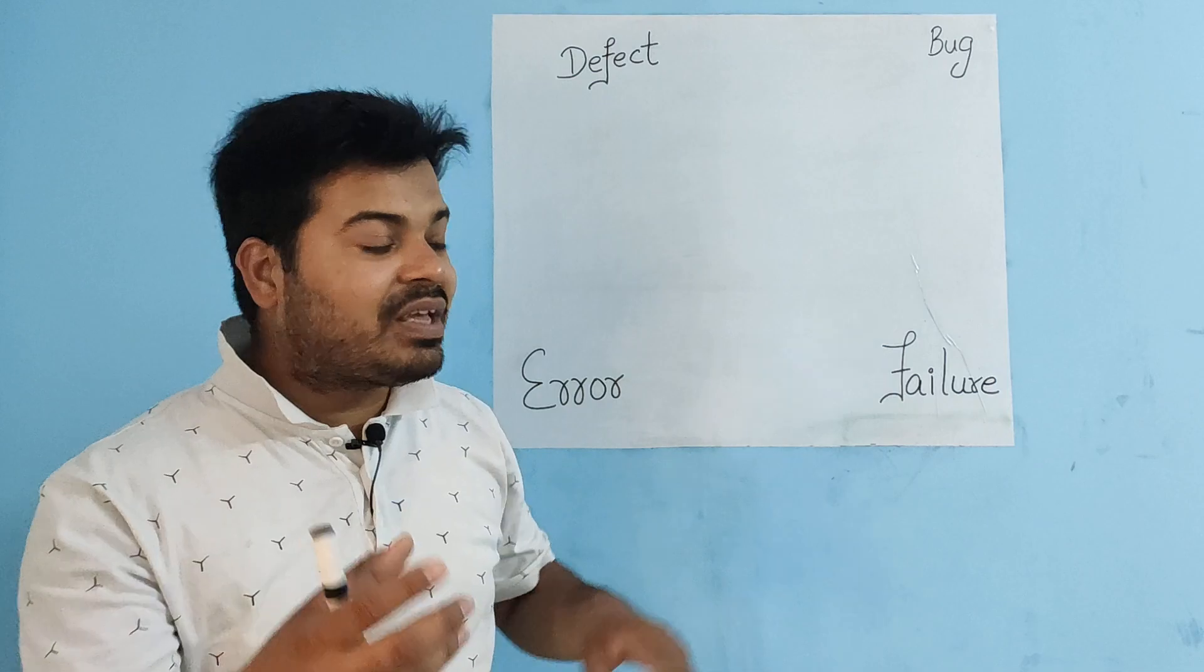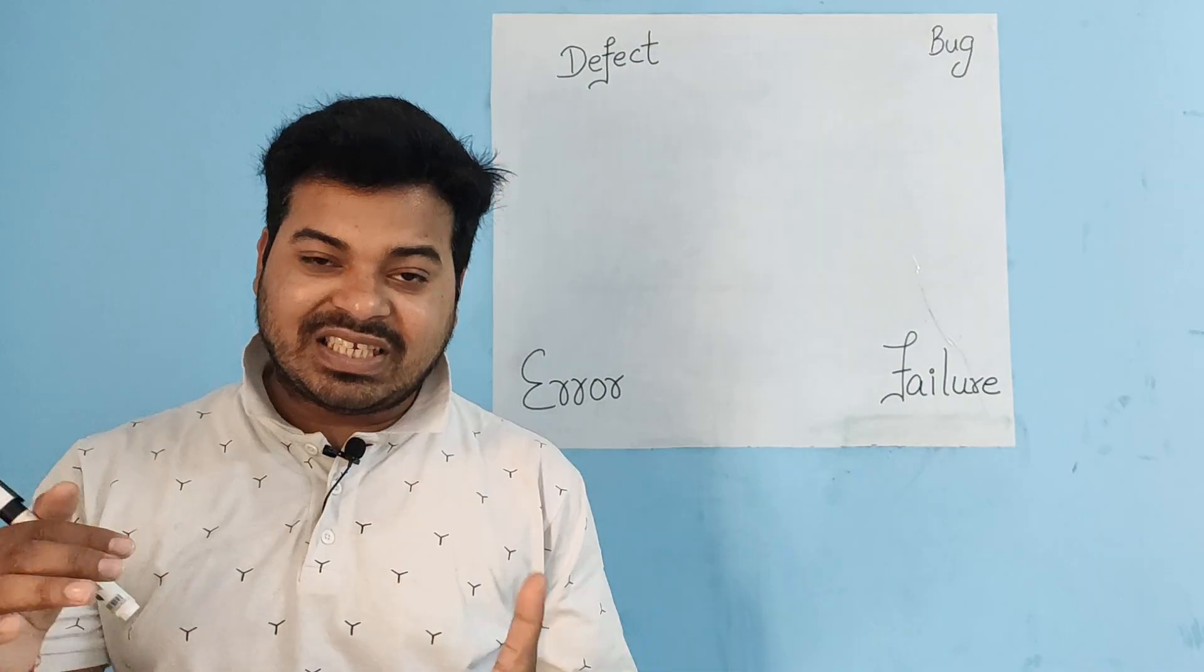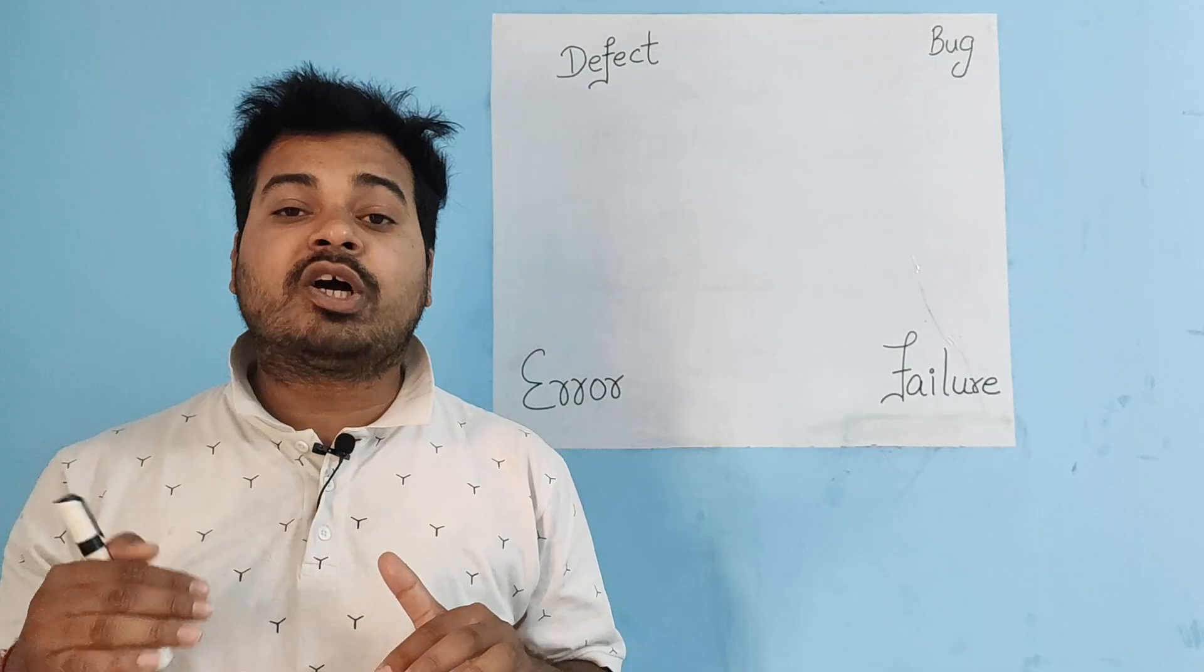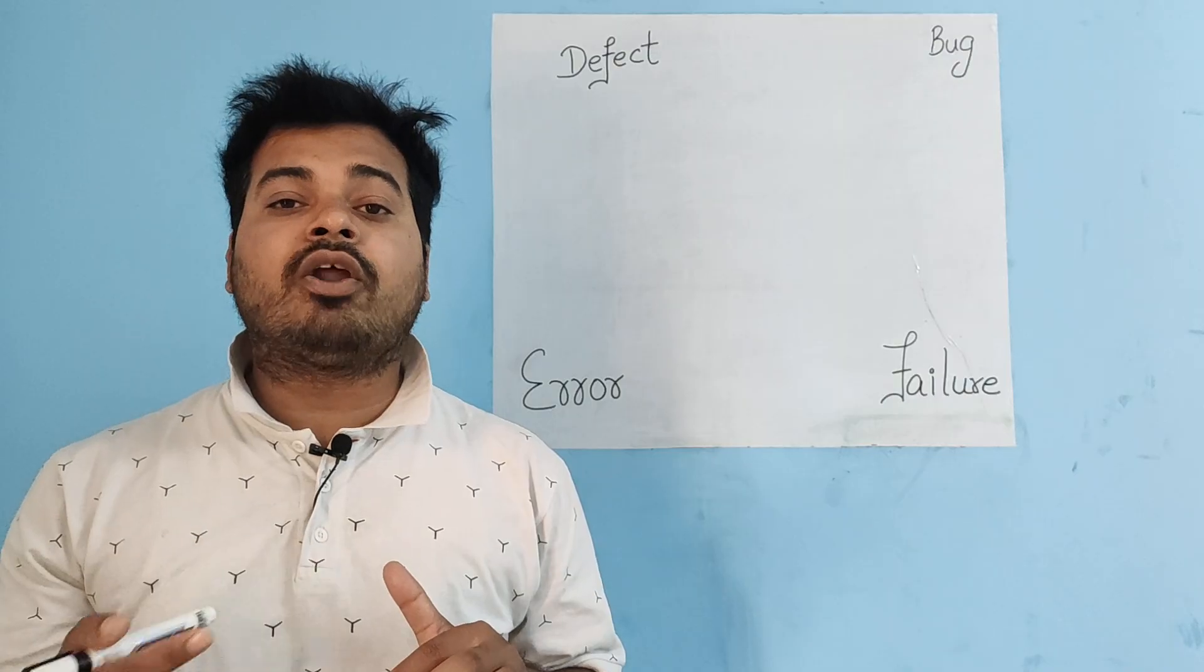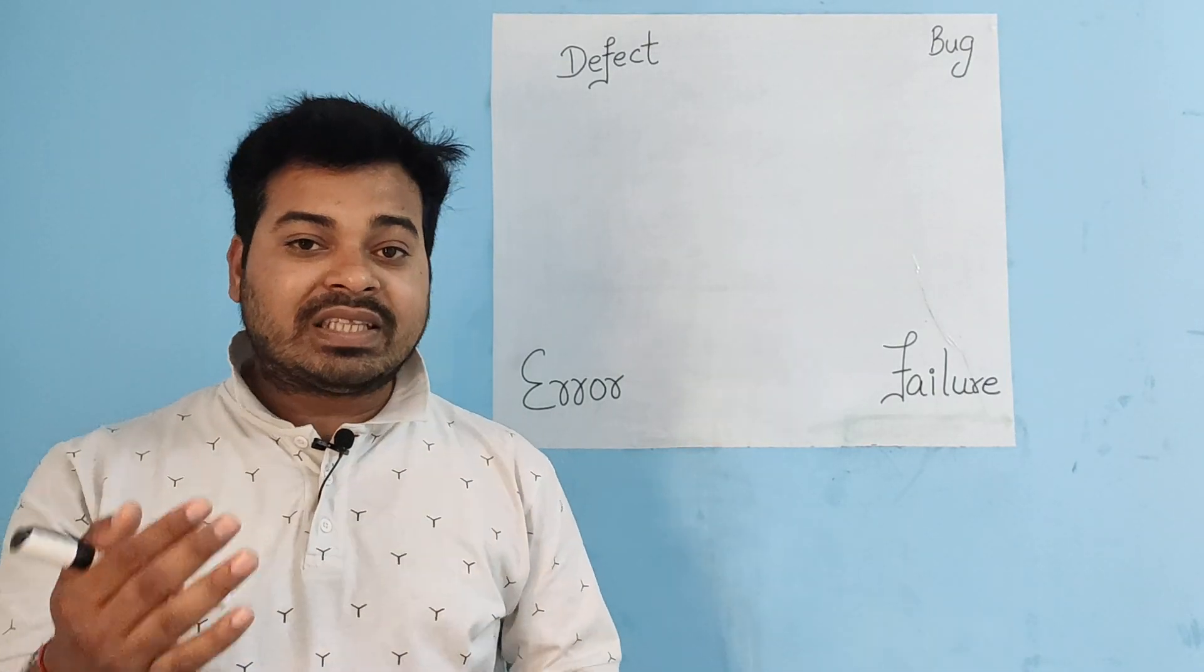Now what do you mean by error? Mistakes done in the program while writing the code because of which developers are not able to either run or compile the code. That is called an error.